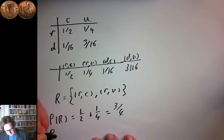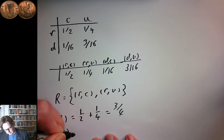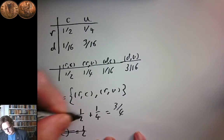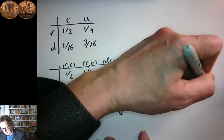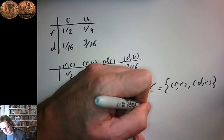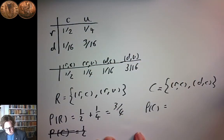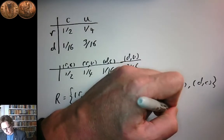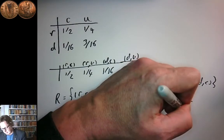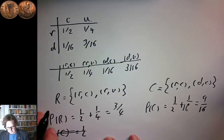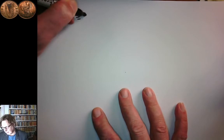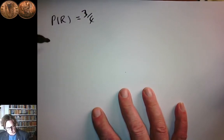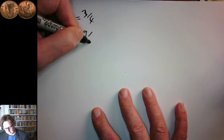Now let's find the probability of it being clear. The event of it being clear is made of rainy-and-clear and dry-and-clear. So the probability of it being clear is the sum of those two probabilities: one half plus a sixteenth, which equals 9 over 16. So we have P(R) = 3/4 and P(C) = 9/16.